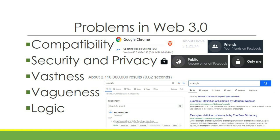Problems in Web 3.0 or semantic webpages. Compatibility is a problem because there are a lot of browsers out there, and each browser has its own versions. Some functionalities may not work on old versions of certain browsers — like HTML5 tags or attributes that might not work on the first release of Mosaic or Internet Explorer, since HTML5 is the current version of HTML.